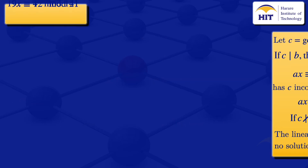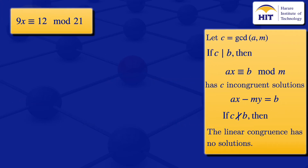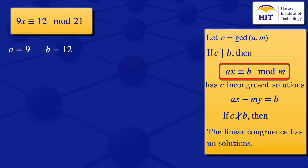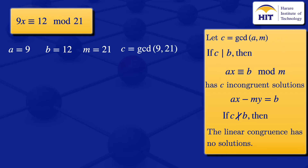Moving on to the second linear congruence: 9x ≡ 12 mod 21. Comparing with the standard form, a = 9, b = 12, m = 21. Our c is the greatest common divisor of 9 and 21. Using the Euclidean algorithm with dividend 21 and divisor 9: 21 = 9 × 2 + 3, since the floor of 21/9 is 2 and 21 − 18 = 3.